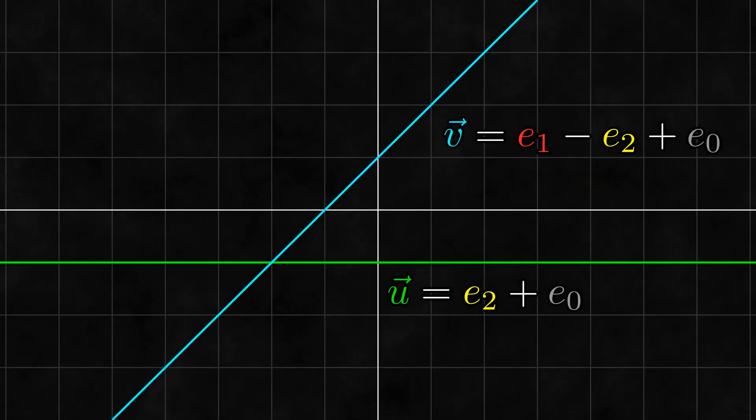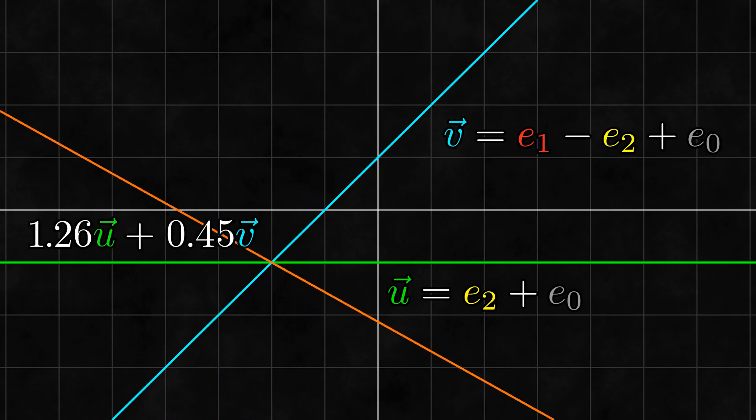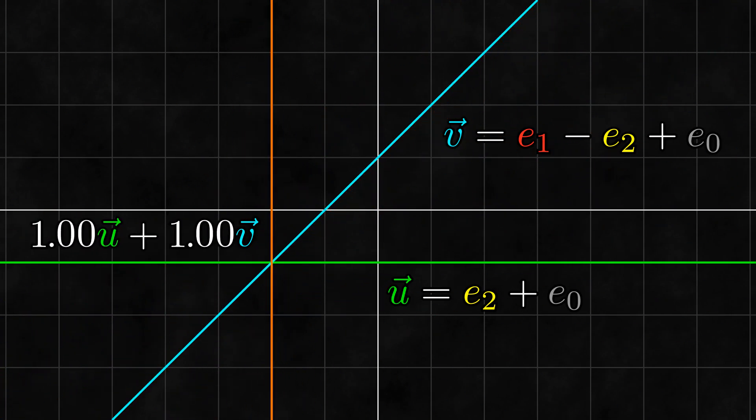Alright, so we now know that when adding two lines, the sum passes through their intersection. But there are still plenty of lines that pass through this point. Which one is it? As we saw before, the answer is the vertical line, but why? Well, we saw in the main video that scaling either of the lines changes the sum. In fact, with the right coefficients, we can reach any of the lines that pass through the intersection point. So what exactly is going on here?